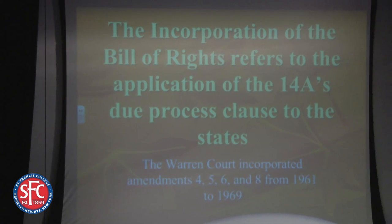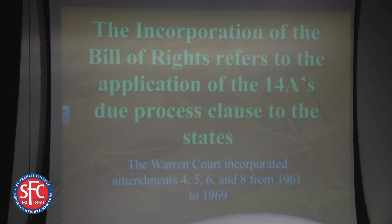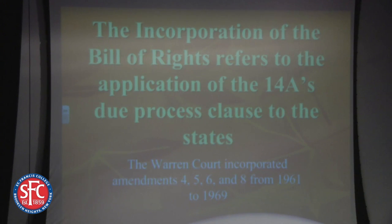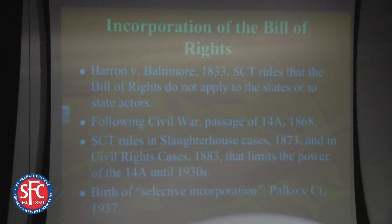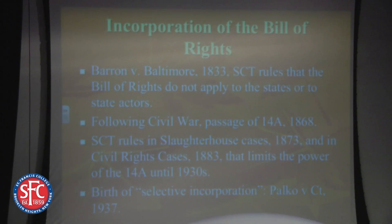The Bill of Rights refers to the first ten amendments. The big ones are the First — speech, religion, the right to petition, the right to associate — and the Warren Court had not a lot to do with that. The Second Amendment is about guns — it wasn't affected during Warren's time. The Third Amendment is quartering of troops; nobody cares. Four, five, six, and eight are referred to as the criminal justice amendments, and that's where the focus of this talk will be. The Fourth Amendment refers to searches and seizures, the Fifth to due process, the Sixth is your right to an attorney, and the Eighth Amendment is cruel and unusual punishment, usually referring to capital punishment or prison sentences.